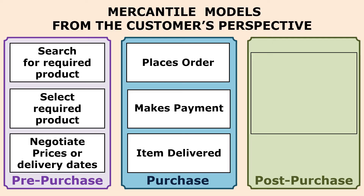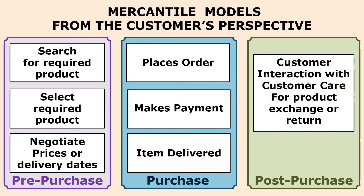Once the payment is received, the online seller dispatches the product as per schedule and delivers the item as per schedule. Delivery partners are involved in delivering the product through a fulfillment center, and the fulfillment center finally delivers the product to the customer's door. This completes the purchase phase.